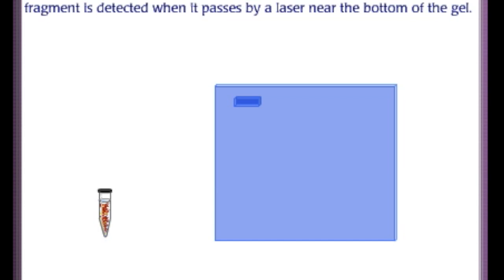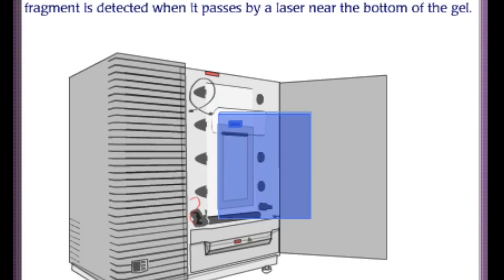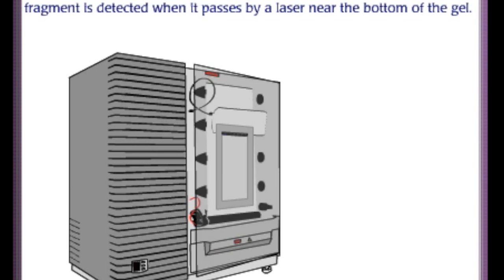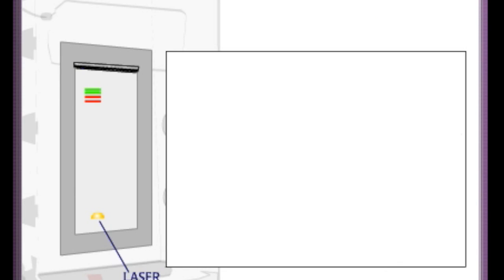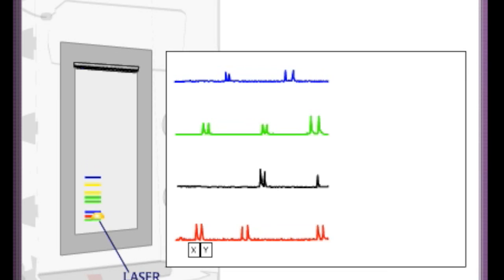The smaller pieces migrate faster than the larger pieces. Each labeled fragment is detected when it passes by a laser near the bottom of the gel. The laser reads all 4 colors and displays an output of the PCR according to their size and the fluorescent colors of the amplified pieces.